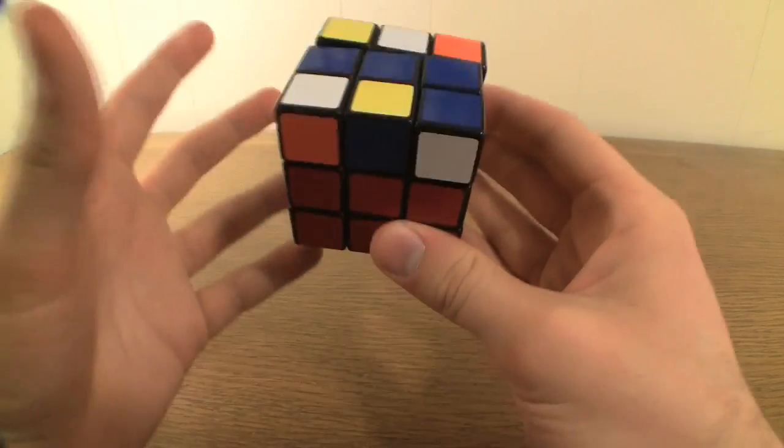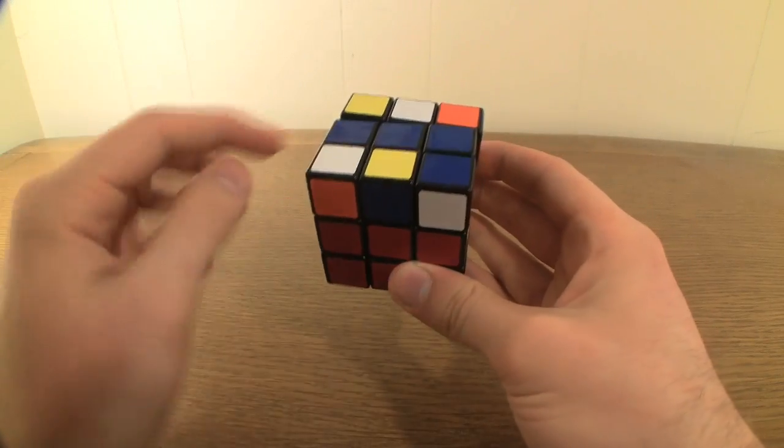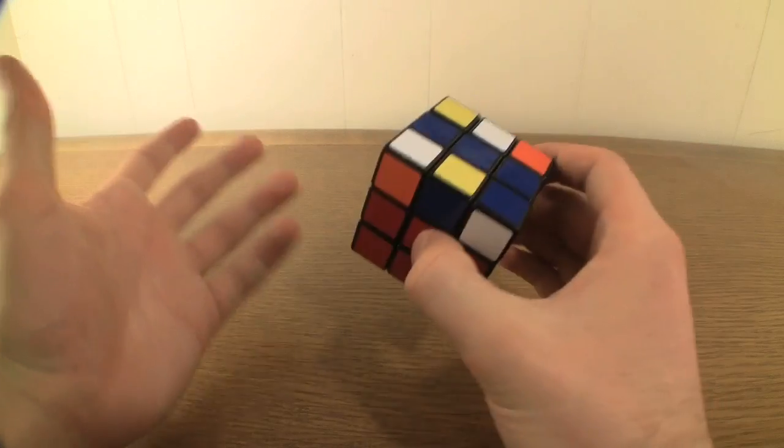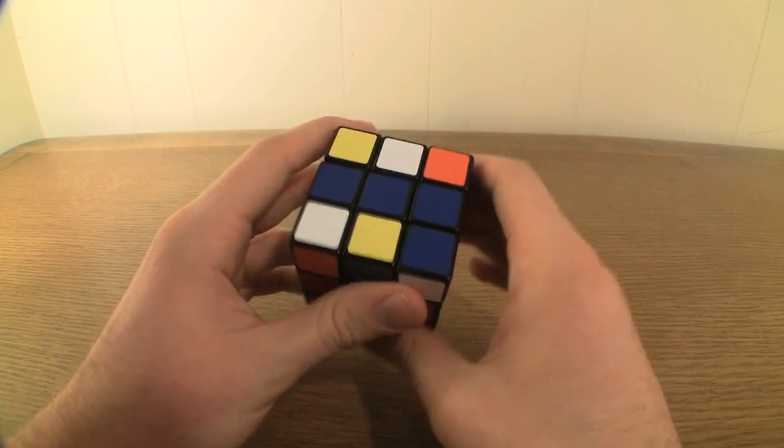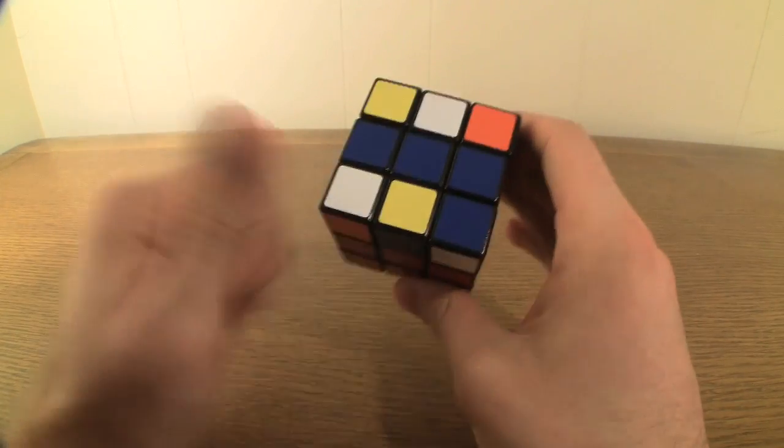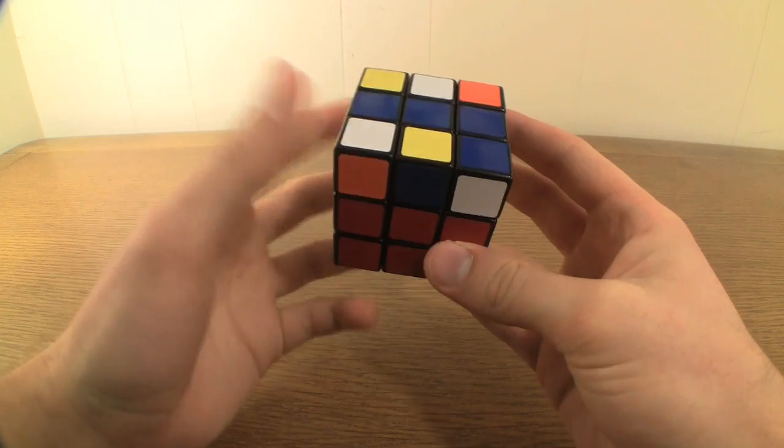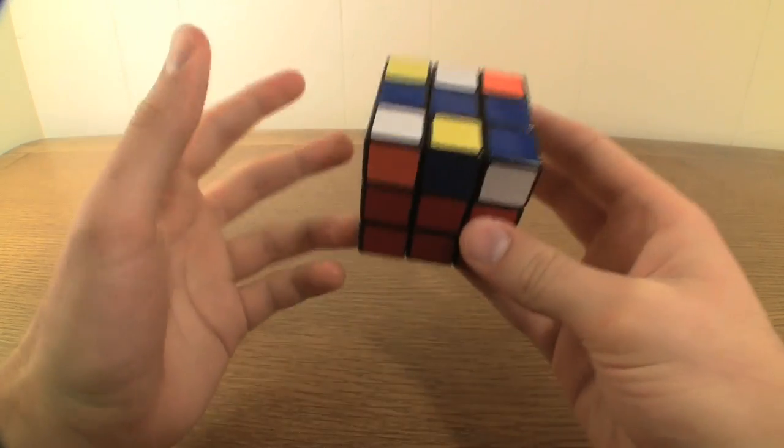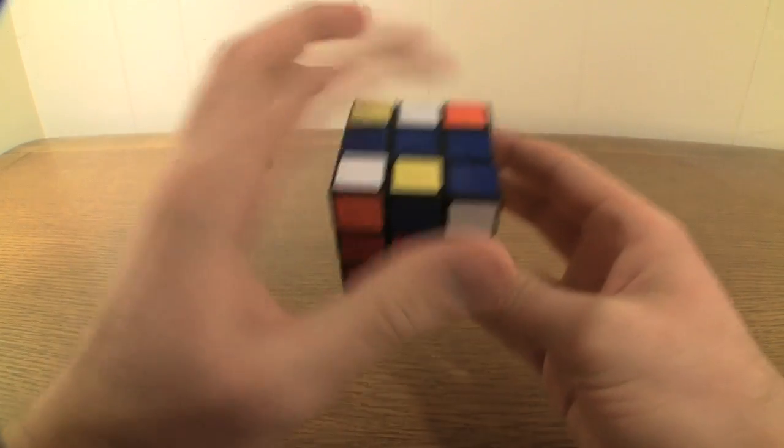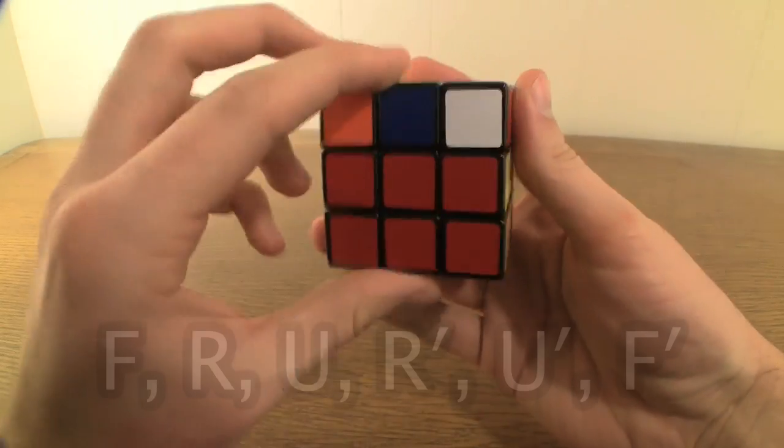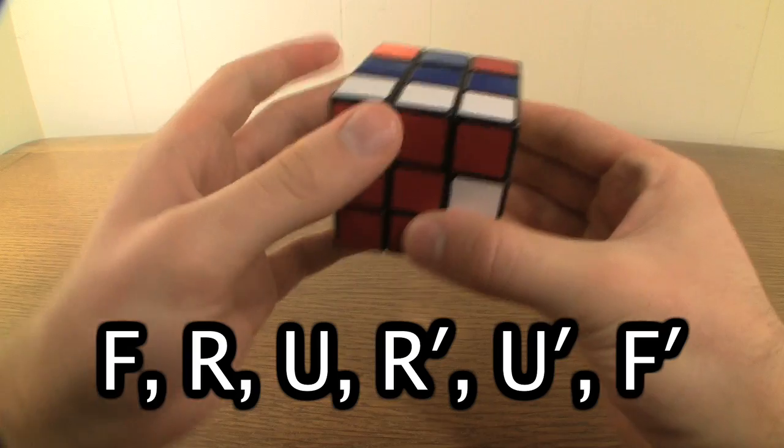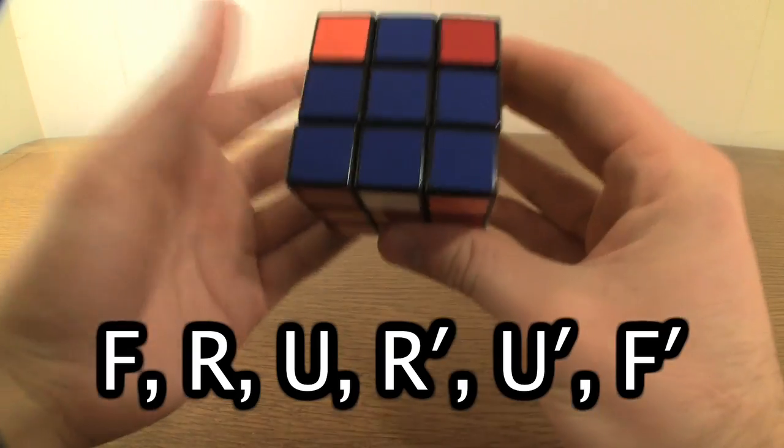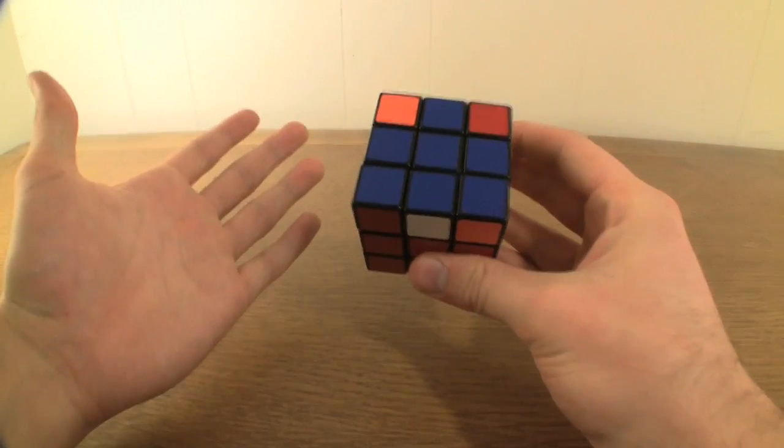This will give you a configuration of blue edge pieces that, along with the center, make a line. Sometimes you'll start right out of the gate with this line. No matter how you get to it, however, what you do once you're here is the same. Hold the cube so that the blue line spans the up face in a left to right manner and perform the algorithm F R U R' U' F'. This will give you the blue cross.